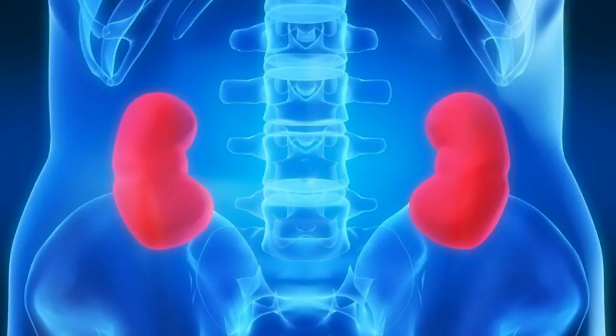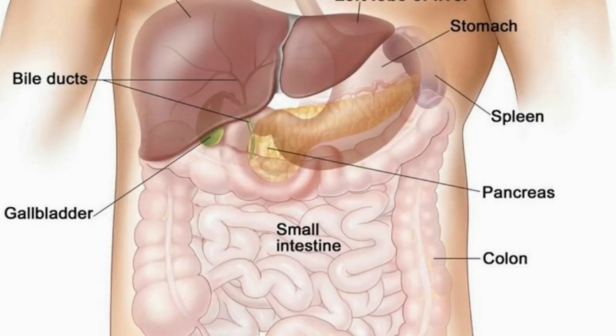Kidneys are a pair of organs that lie on either side of the vertebral column, and are located in the posterior abdominal wall underneath the diaphragm. Each kidney is about 11 to 14 cm in length, about 6 cm in width and about 3 cm in thickness.